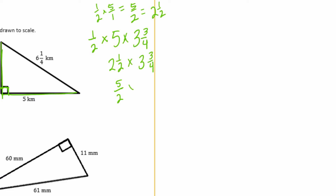2 and a half becomes 5 halves. For 3 and three-fourths: 3 times 4 is 12, plus 3 is 15, so that's 15 fourths. 5 times 15 is 75, and 2 times 4 is 8, giving us 75 eighths. Converting to a mixed number: 8 goes into 75 nine times (8 × 9 = 72), with 3 left over — so 9 and three-eighths. Our label is kilometers squared.